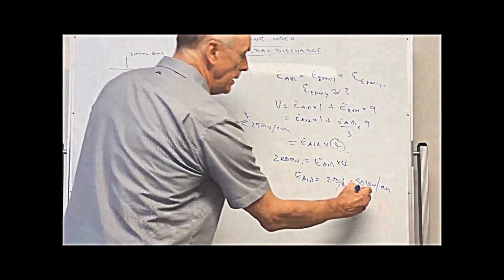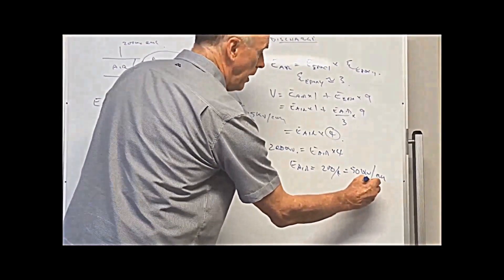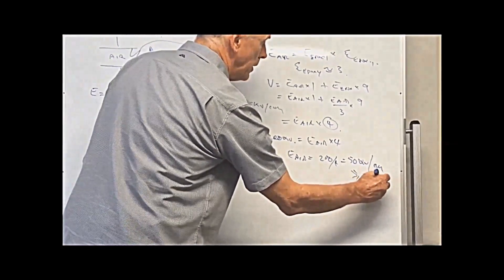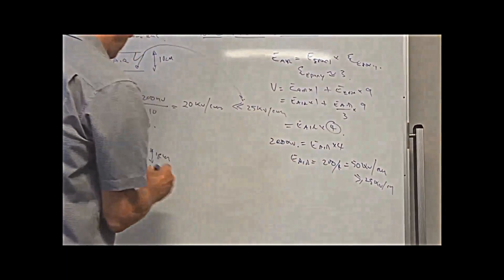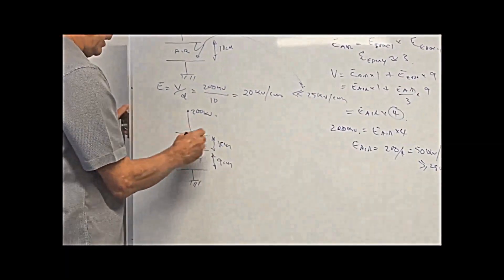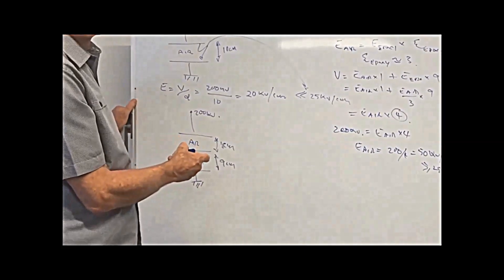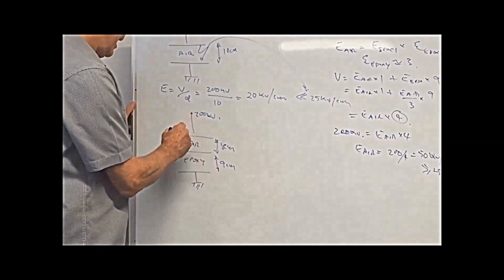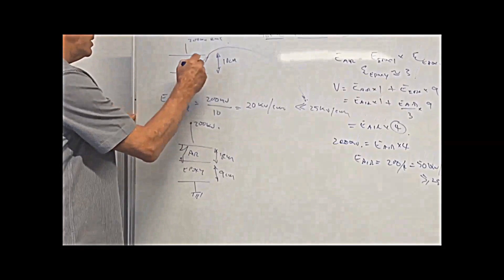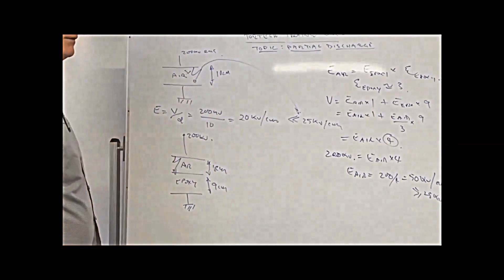And that is much larger than 25 kV per centimeter. So what will happen actually, you've actually increased the stress on the air by the introduction of an extra insulation medium. And that will definitely flash over, whilst this one won't flash over.